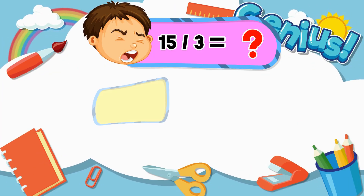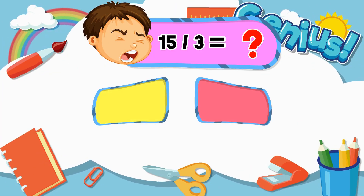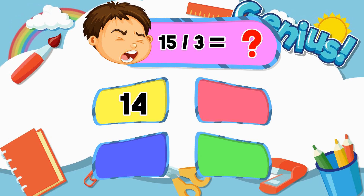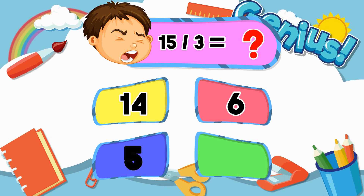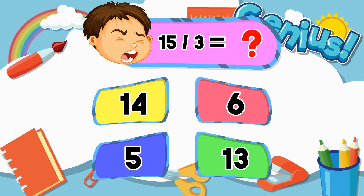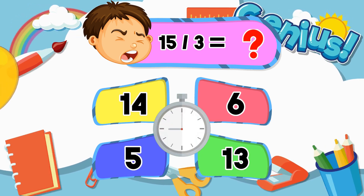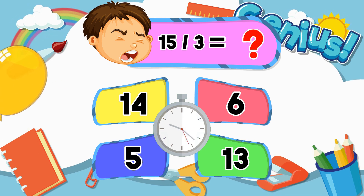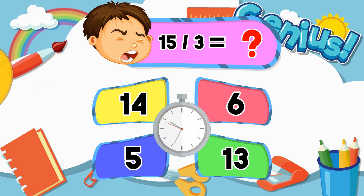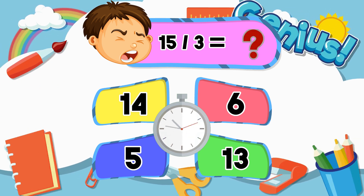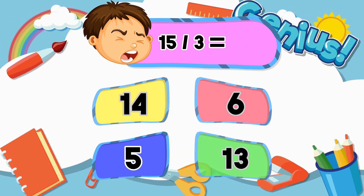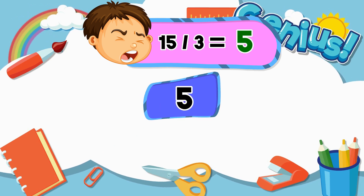What is 15 divided by 3? 14, 6, 5, 13. Answer: 5.